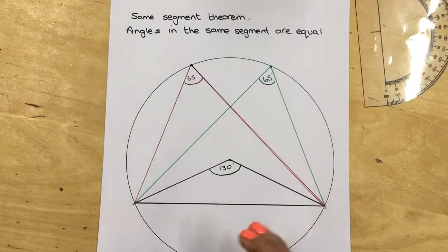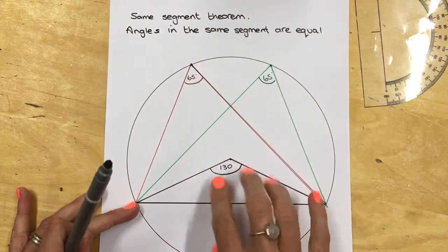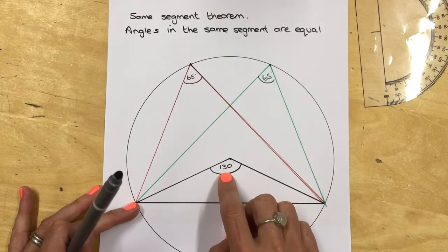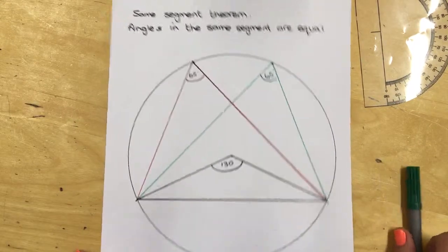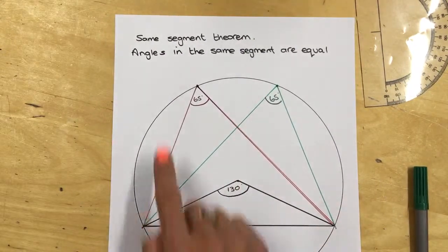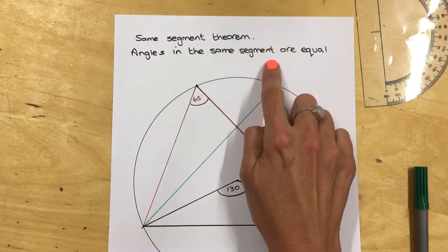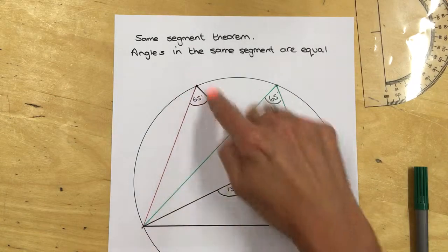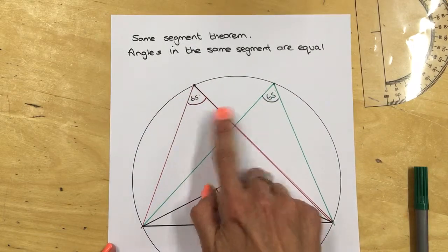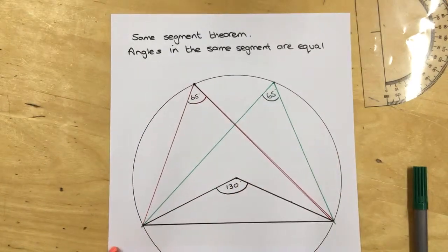And it must be because angles at the centre are double that at the circumference. So it must work for both sections. Angles in the same segment are equal. This is your segment. They are coming from the same segment. So angles in the same segment are equal.